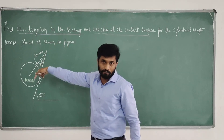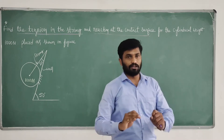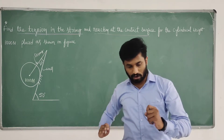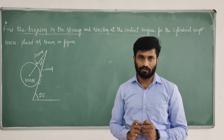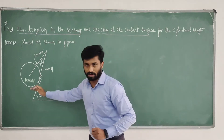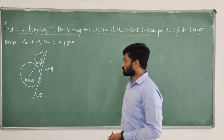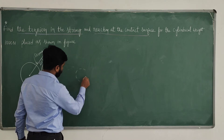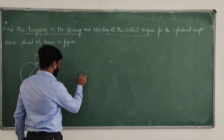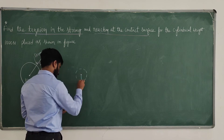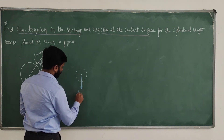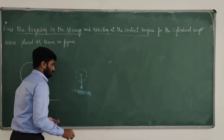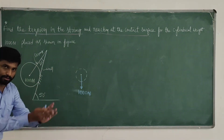As per the free body diagram, if there is a string in a system there is a tensile force, and at contact surfaces reactions are developed perpendicular to the contact surface. Here 1000 Newton is given, acting towards gravity. So first write the free body diagram. It is a sphere of weight 1000 Newton, acting towards gravity because self weight always acts towards gravity.